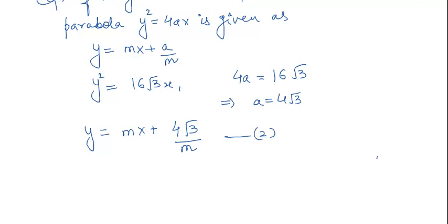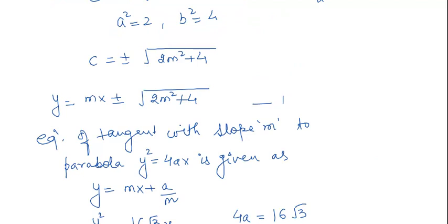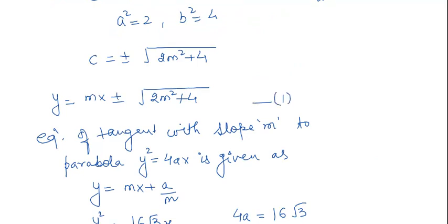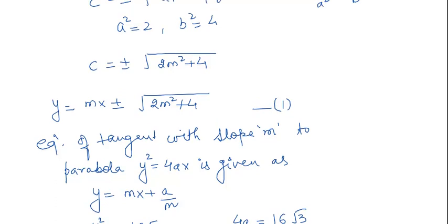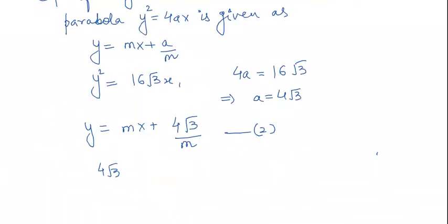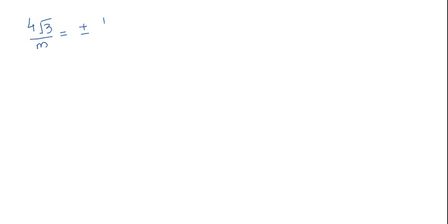Since both equations represent the same common tangent line, we compare them. Equating the constant terms gives 4√3/m = ±√(2m² + 4). We now square both sides to find the value of m.